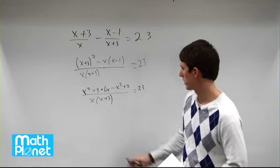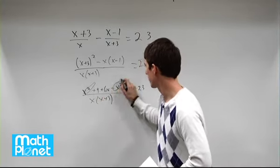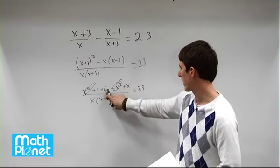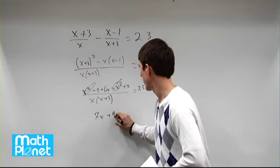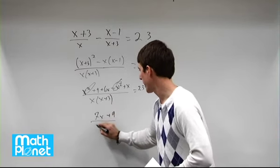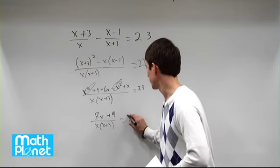Finally, we can simplify the numerator. We have x squared minus x squared, so those cancel each other out. Then we have 6x plus x, so we have 7x plus 9 from here divided by x times x plus 3 equals 23.